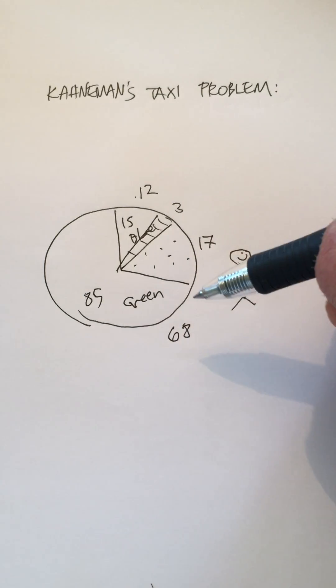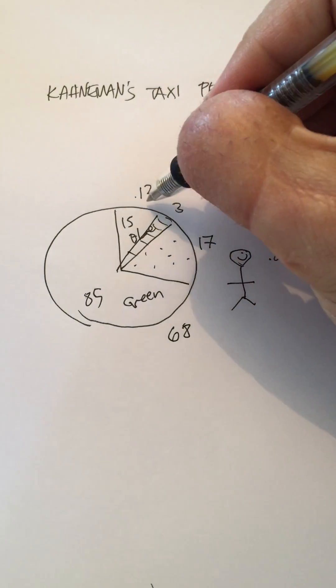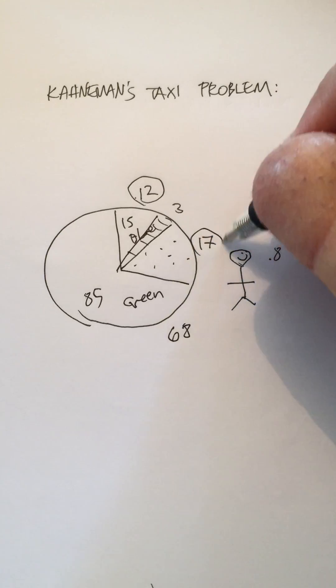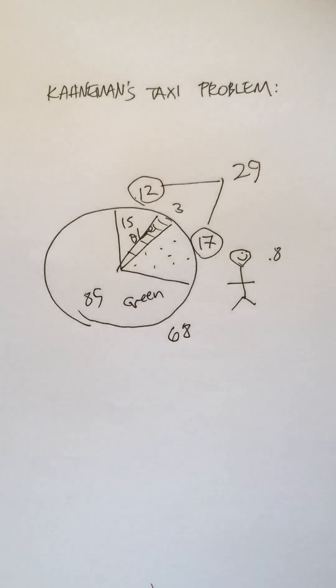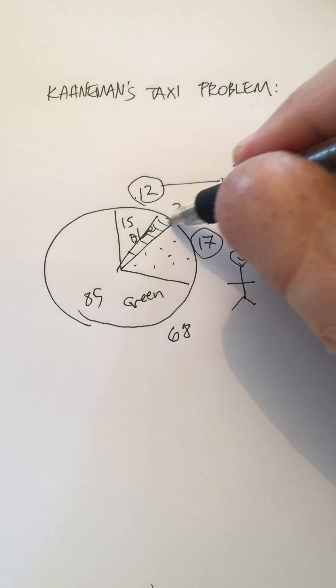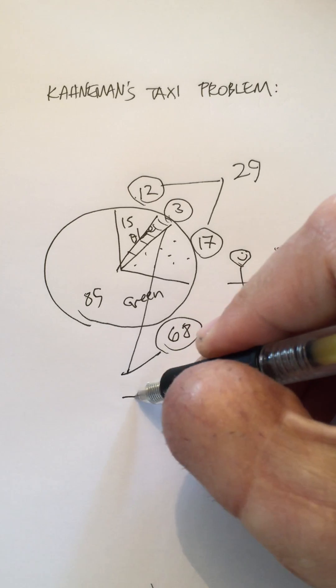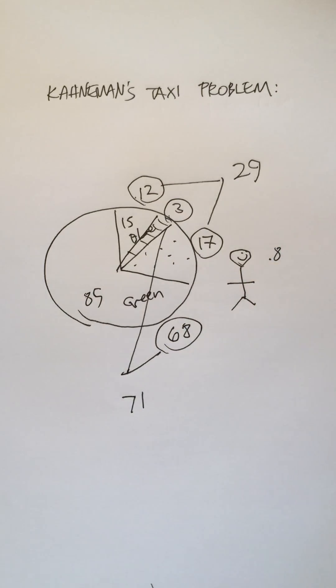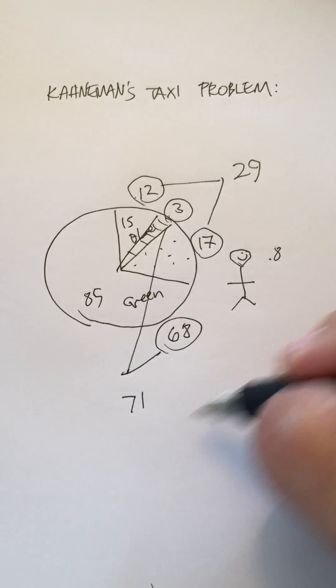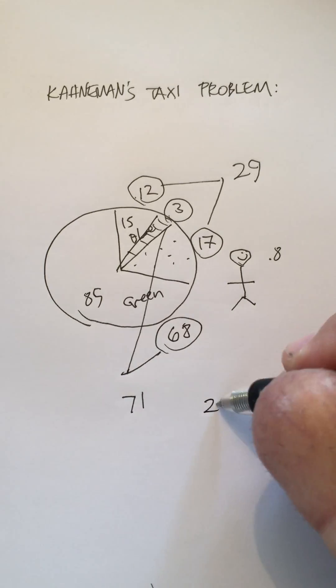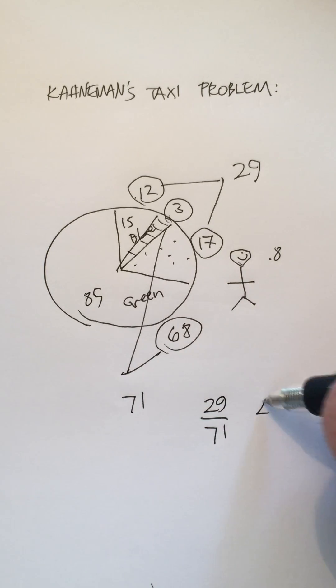So when we look at just the blue cars, if we want to sum up the proportion of the blue cars, we add these together and we get 29. If we want to look at the proportion of the green cars, we sum these together and we get 71, and then the total proportion is 29 over 71, which is approximately 41%.